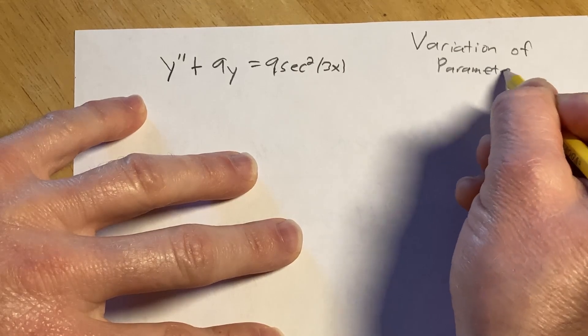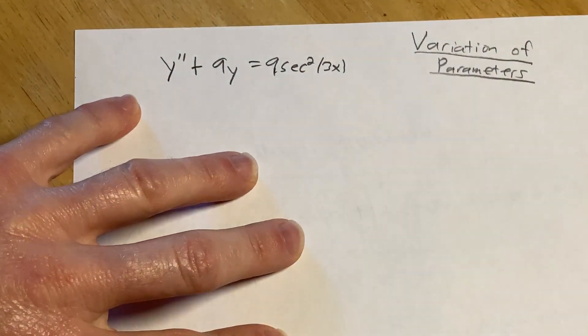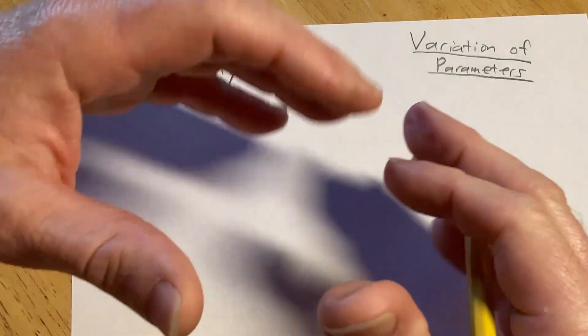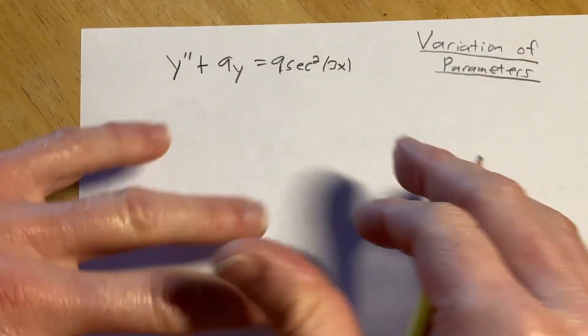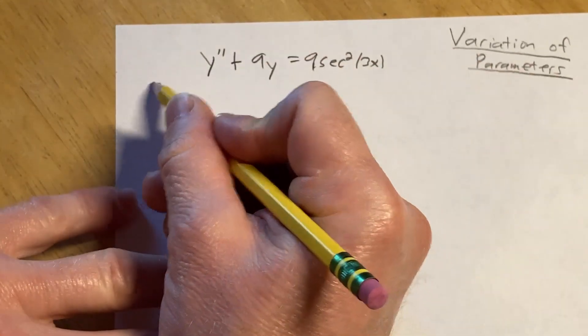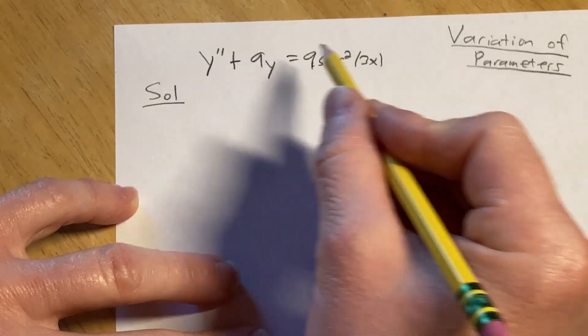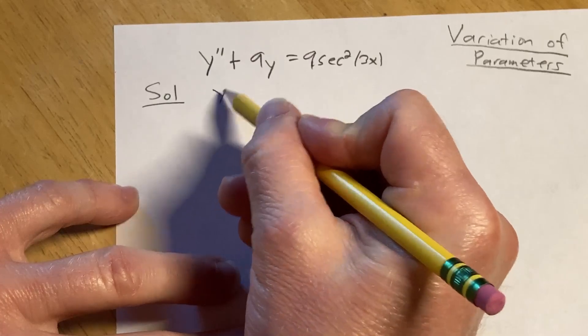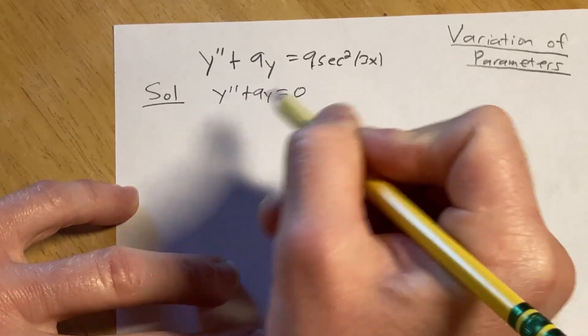And this is really messy. It's a really messy problem. So what I'm going to do is I'm just going to go through the process and give you the formulas as we go through the problem. So solution. The first thing you do is you solve the associated homogeneous equation. Basically, you pretend it's equal to zero. So you basically solve this equation.